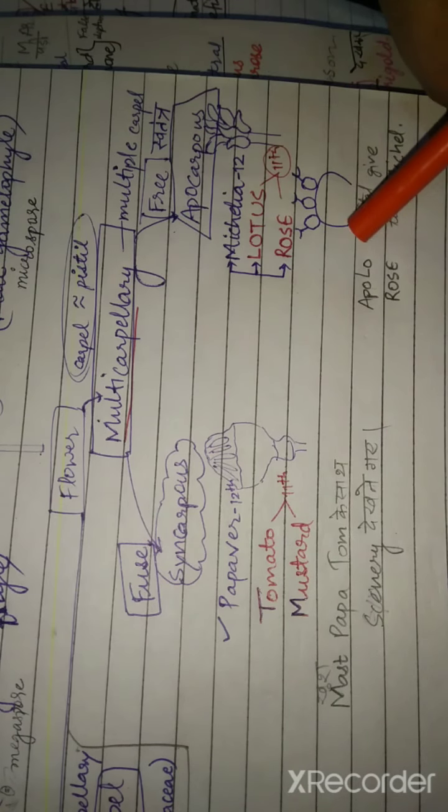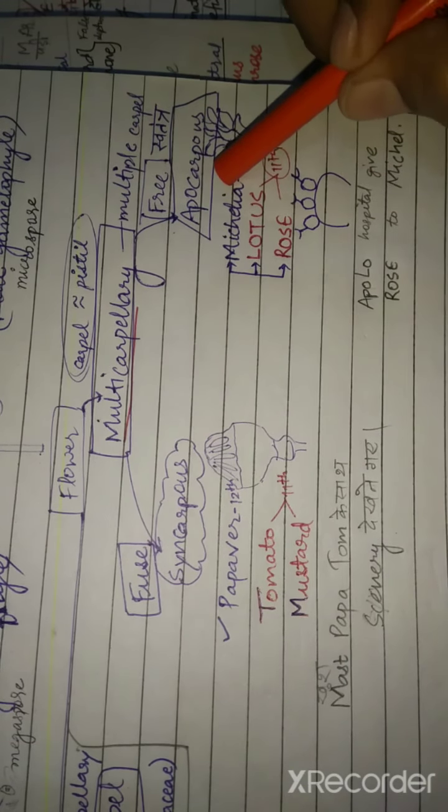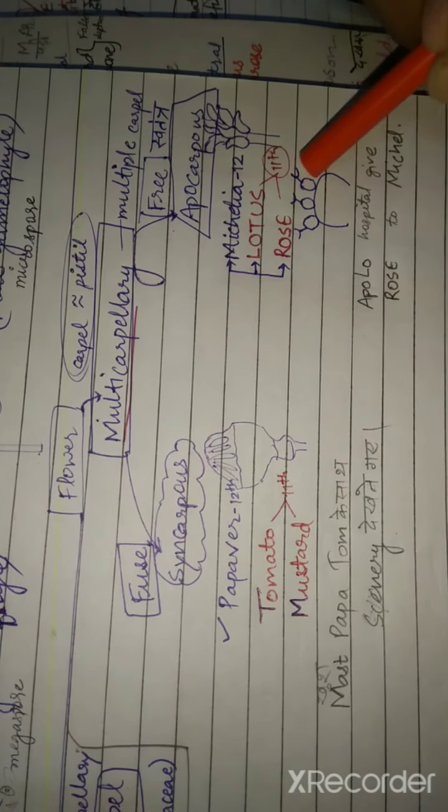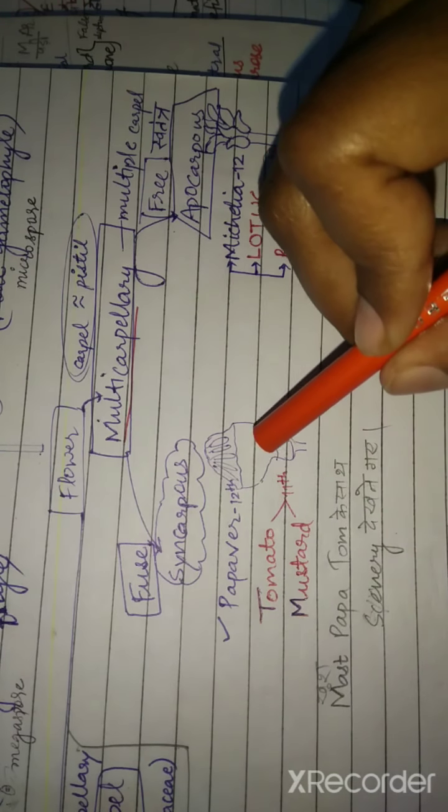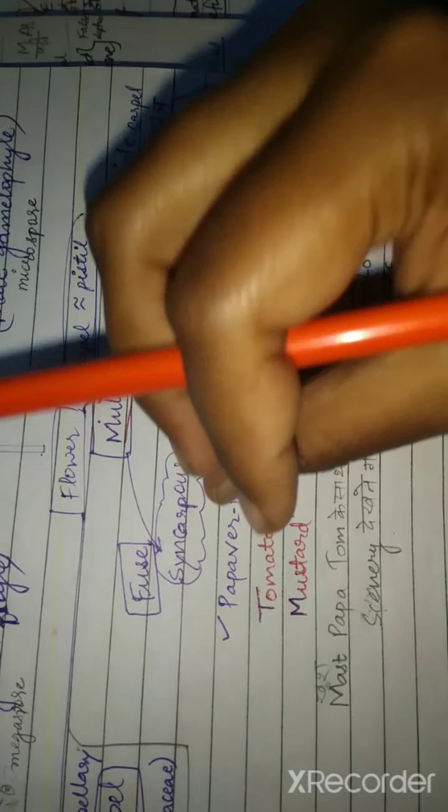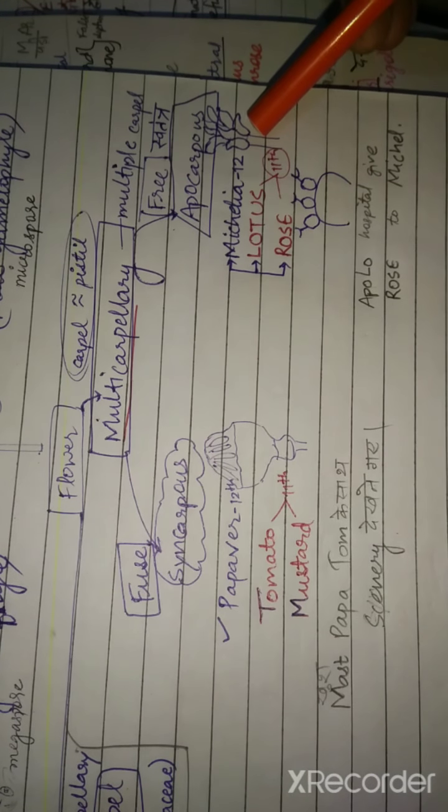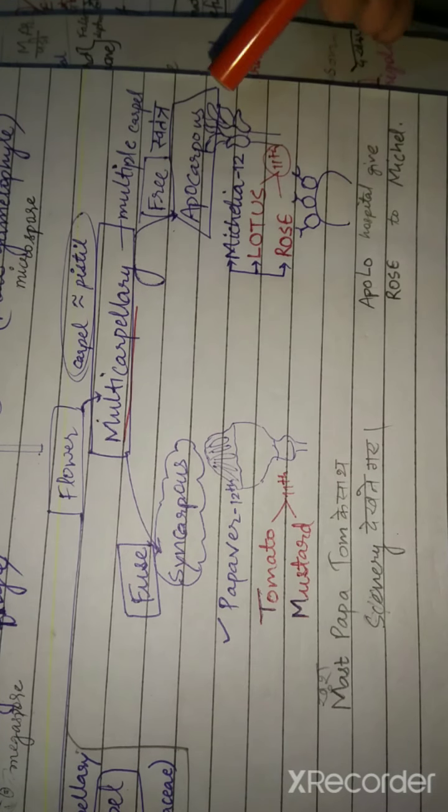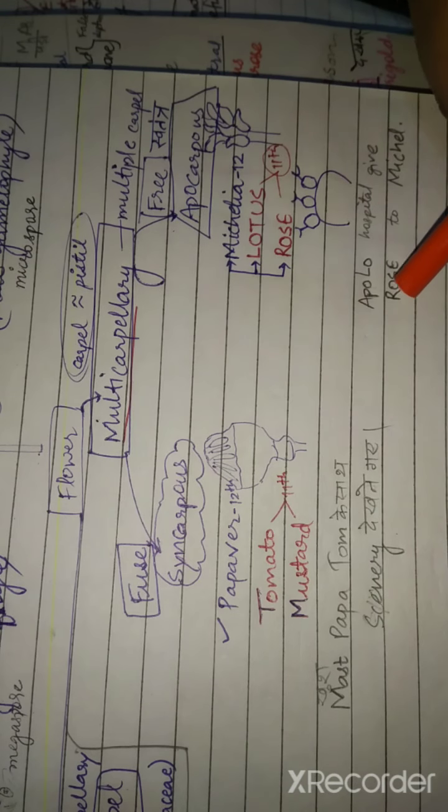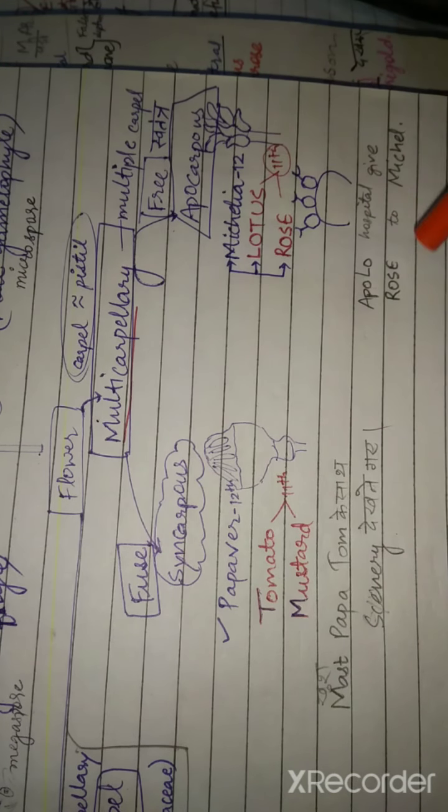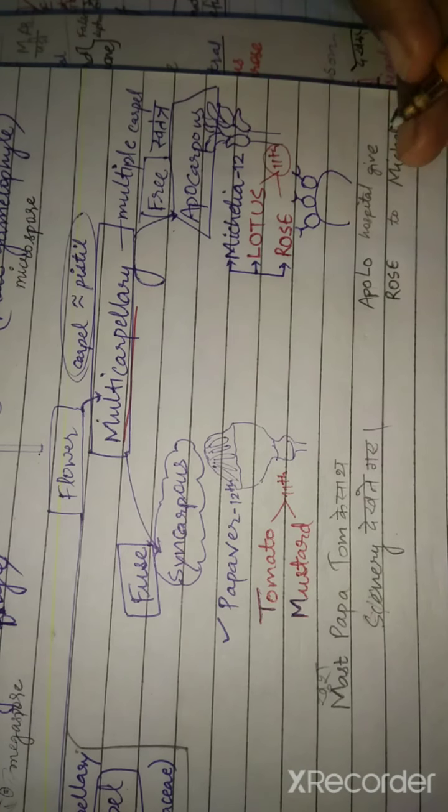In multicarpellary condition, the apocarpus free parts will show separation. But syncarpus is jointed. I have made a diagram of Michelia. This is the way to remember.